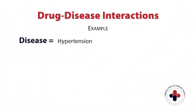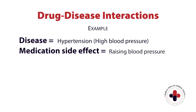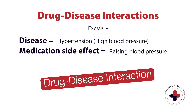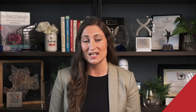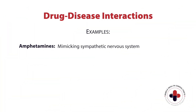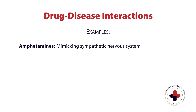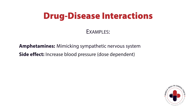If a patient has hypertension or high blood pressure, any medication with a side effect of raising blood pressure would have a drug-disease interaction. A significant interaction would look like Adderall, for example — dextroamphetamine and amphetamine salts. Amphetamines work by mimicking our sympathetic nervous system, and we see a dose-dependent increase in blood pressure in around 15 to 30 percent of patients taking this drug.